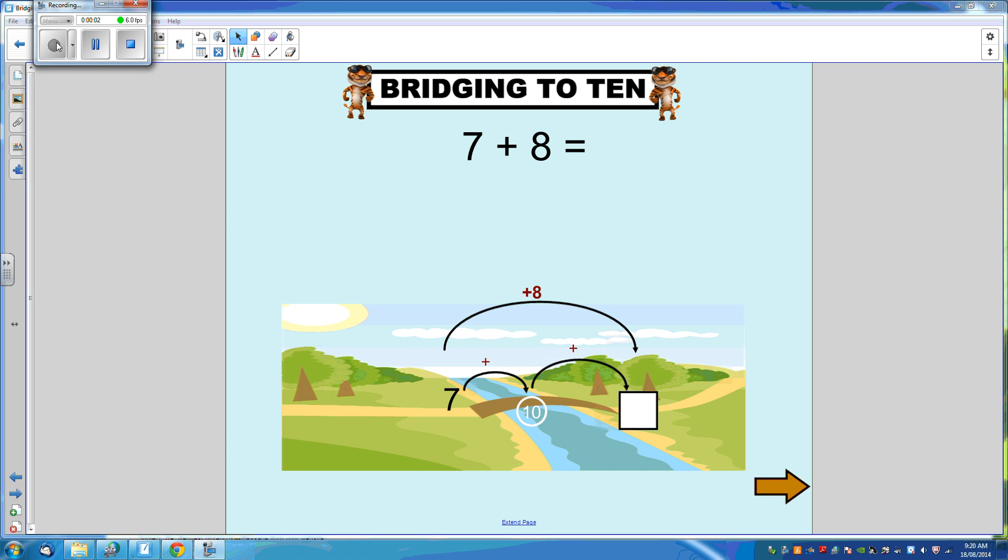Bridging to 10 is a strategy that we can use to help us adding or subtracting. Let's look at a simple example of adding using the strategy of bridging to 10.